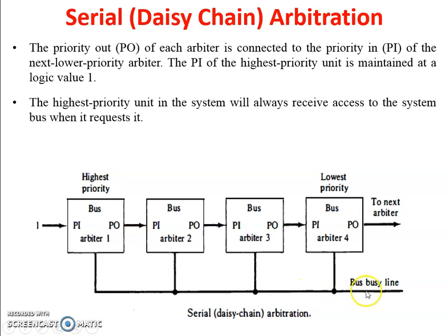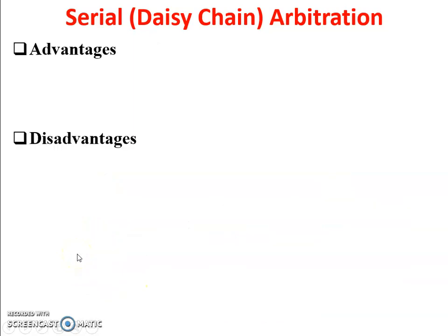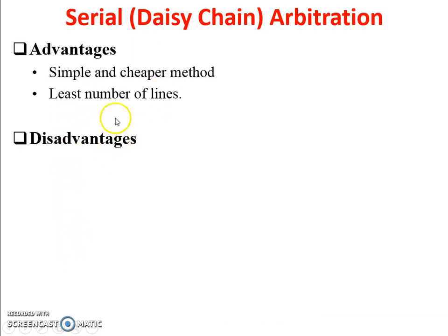The controller gives access first to arbiter one, then it passes to arbiter two, then arbiter three, and then arbiter four. The processor whose arbiter has PI equal to one and PO equal to zero is the one that accesses the system bus. In this figure, PI equals one and PO equals zero in arbiter one, so processor one (arbiter one) accesses the system bus.